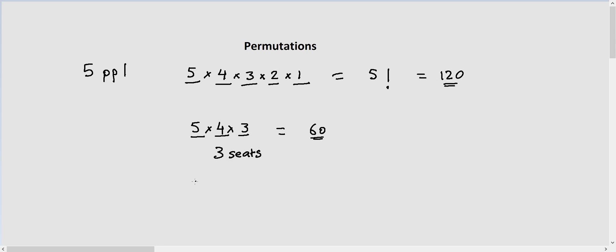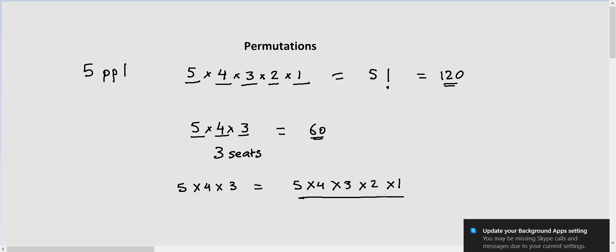This can also be written in another form. We can write 5 × 4 × 3 as 5 × 4 × 3 × 2 × 1, and below we can write it as 2 × 1.